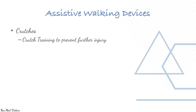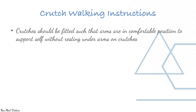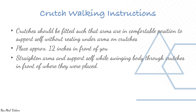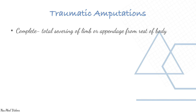Walking aids such as crutches, canes, and walkers can help prevent further injury. Crutches should be fitted so arms are in a comfortable position to support without resting under the arms. Place crutches approximately 12 inches in front of you, straighten the arms, and support yourself while swinging the body through to in front of where the crutches were placed. Use caution on stairs.